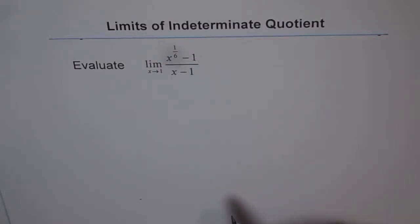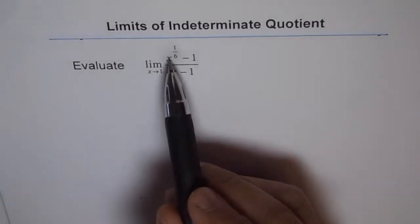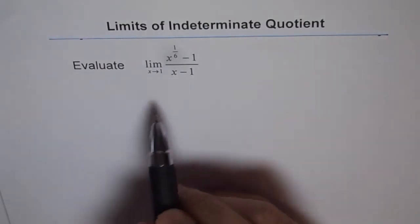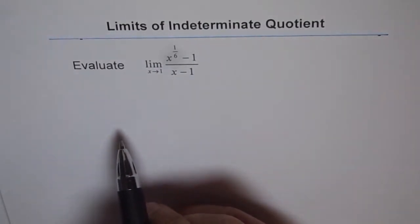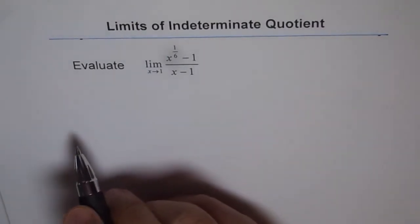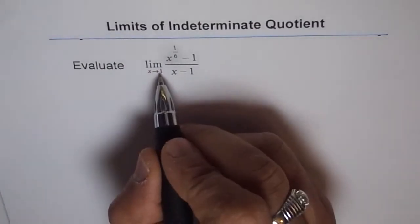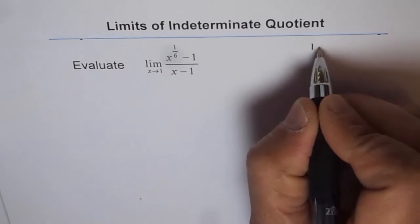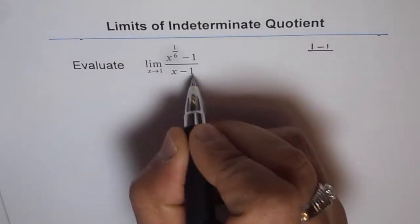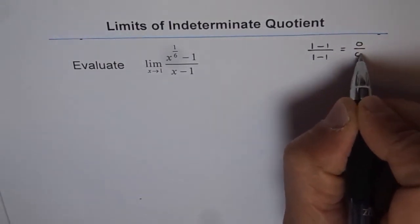Limits of indeterminate quotients. Evaluate the limit of the function x to the power of 1/6 minus 1, divided by x minus 1, where x approaches 1. To evaluate such limits, we plug in 1: 1 to the power of anything is 1, so we get 1 minus 1 in the numerator and 1 minus 1 in the denominator. That gives us 0 over 0.